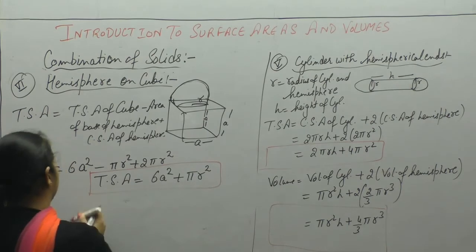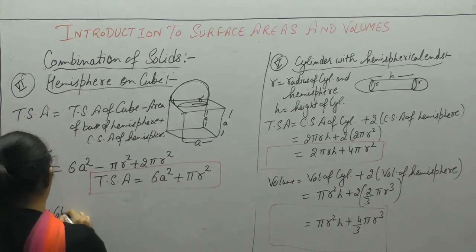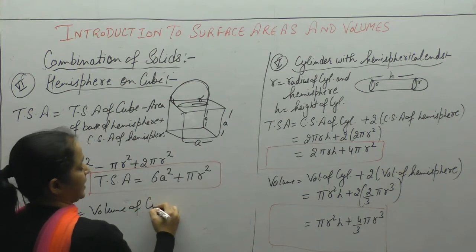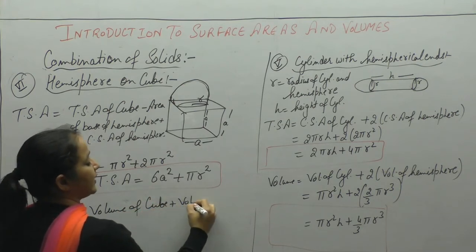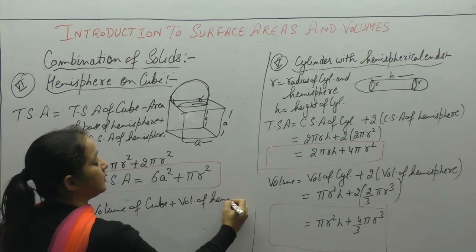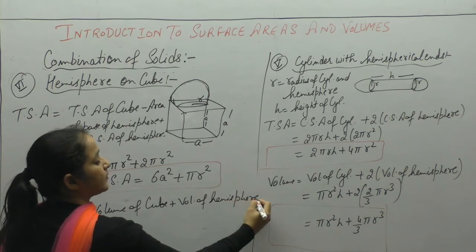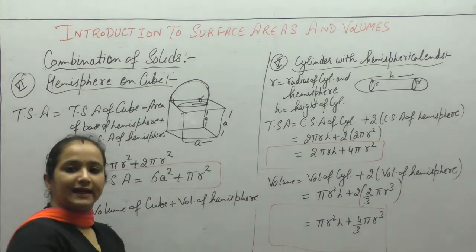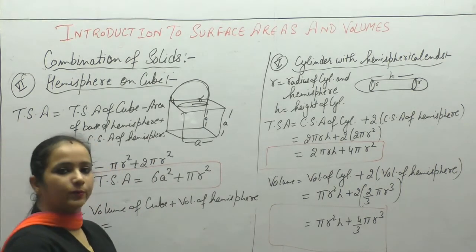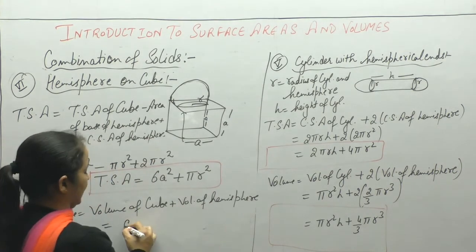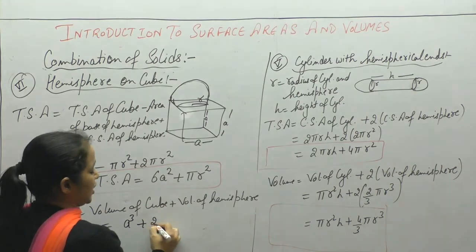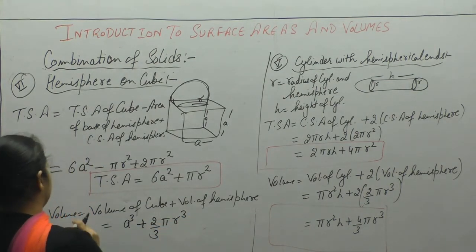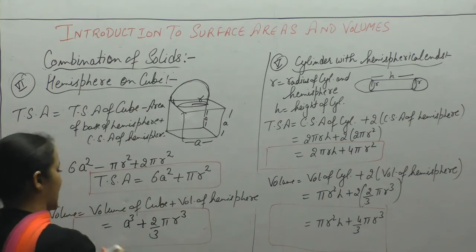Now for volume: volume = volume of cube + volume of hemisphere. Volume of a cuboid is length × breadth × height, and for a cube with side a, volume = a³. Plus volume of hemisphere = (2/3)πr³. So total volume = a³ + (2/3)πr³.